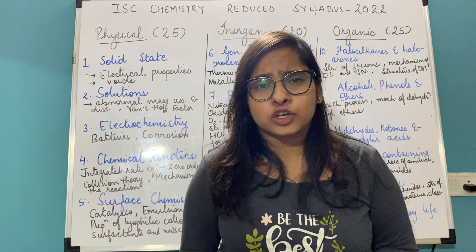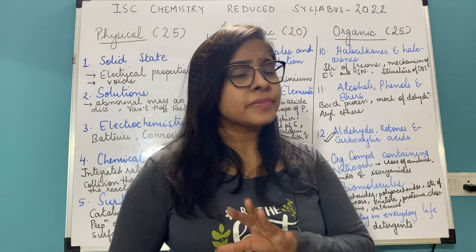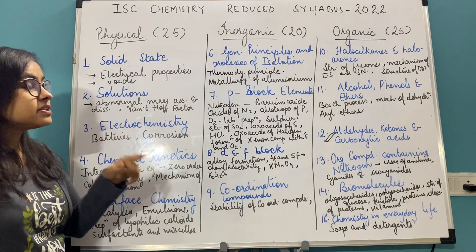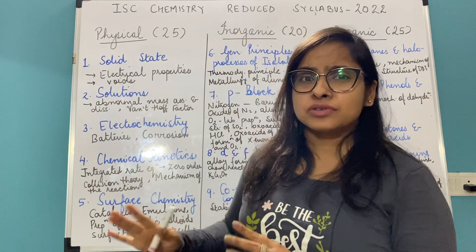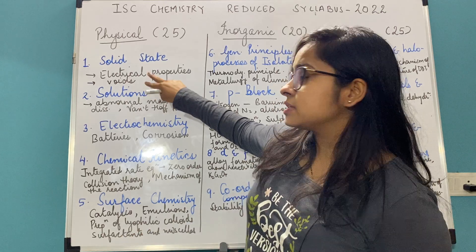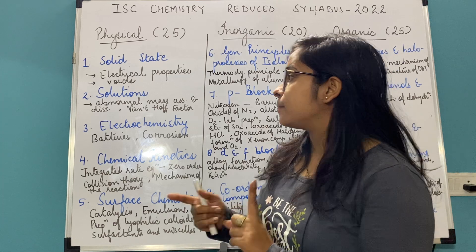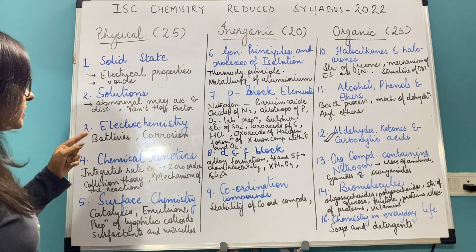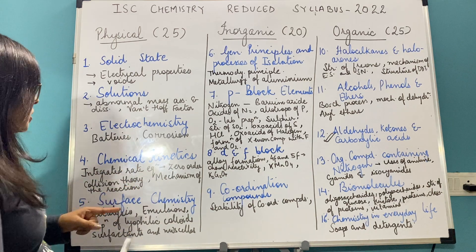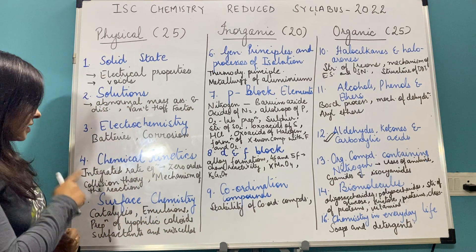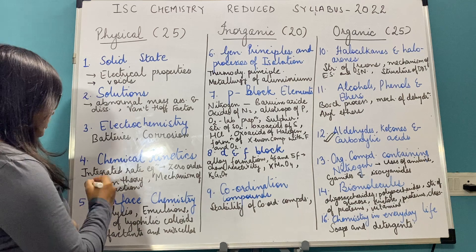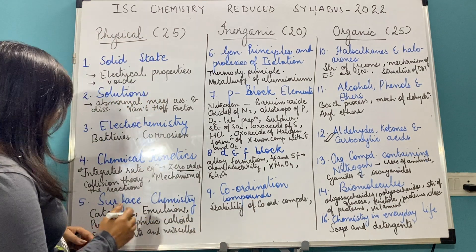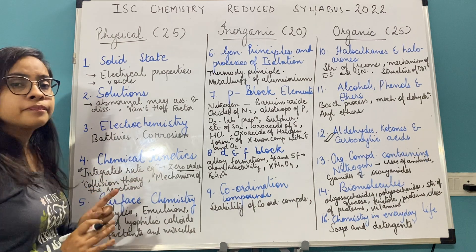We will only restrict ourselves to the theory paper. Talking about the first lesson, Solid State: electrical properties of metals and voids — types of voids — have been removed. These are two sub-topics which have been reduced. Coming to the next lesson, Solutions: abnormal molar mass, association and dissociation, and Van't Hoff factor have been reduced. In Chemical Kinetics, the integrated rate equation and zero order reaction have been removed — you only need to study first order reaction. Collision theory and mechanism of reaction have also been reduced.